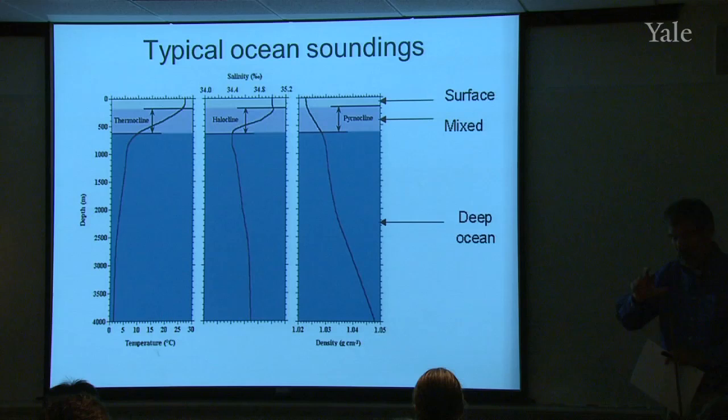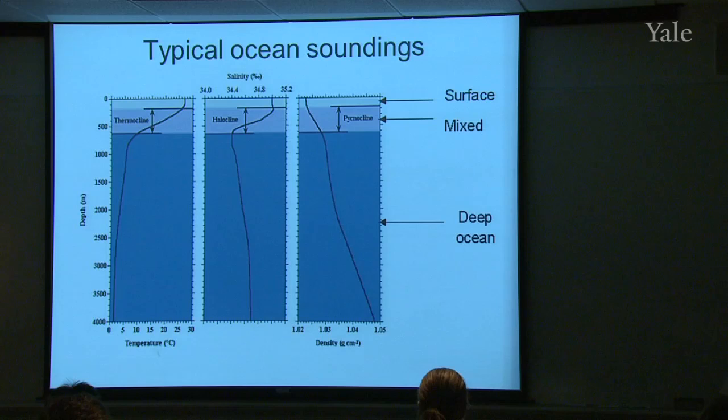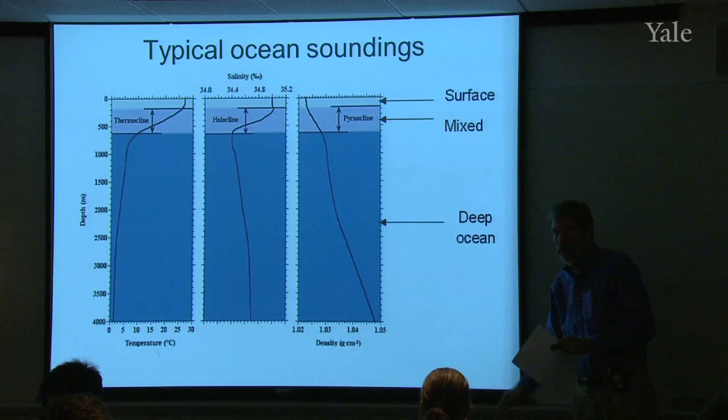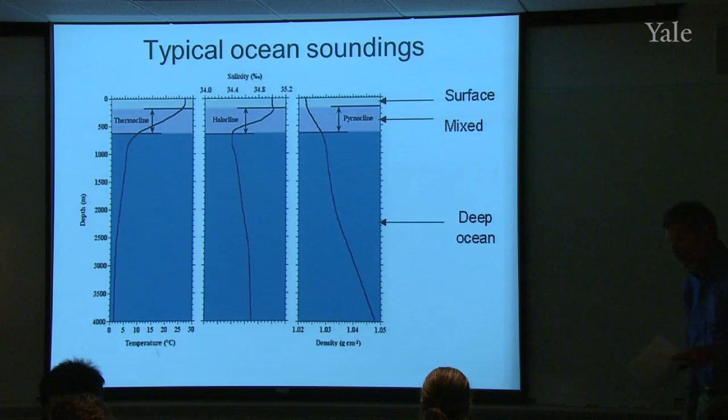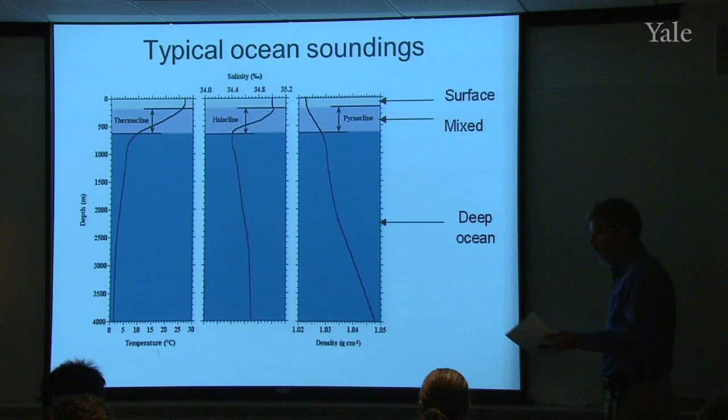So years ago when I was first starting out, I was looking at some CTD data from a ship and thought I found an unstable layer. I went running up to the chief scientist to show him this remarkable discovery, and he quickly pointed out where I had made a mistake in my calculations. So once again, the ocean was found to be stable, which has been proven many, many times.